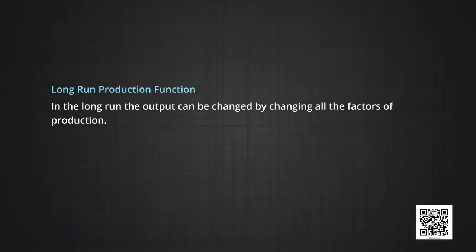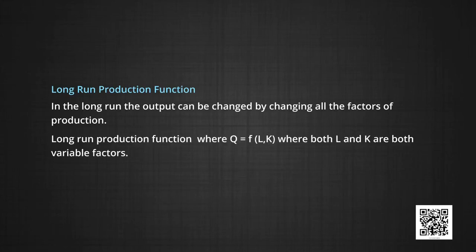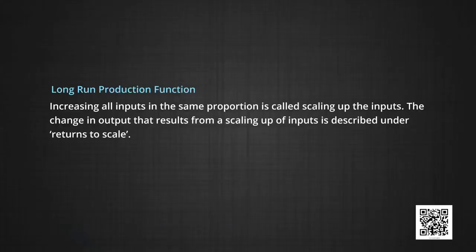We now turn to the long run production function. In the long run, output can be changed by changing all the factors of production. A long run production function is also described as Q equals F of L and K. In this case, both L and K are variable factors. As all the factor inputs are variable in the long run, the ratio between various inputs can remain the same at different levels of output. Increasing all inputs in the same proportion is called scaling up the inputs. The change in output that results from a scaling up of inputs is described under returns to scale.